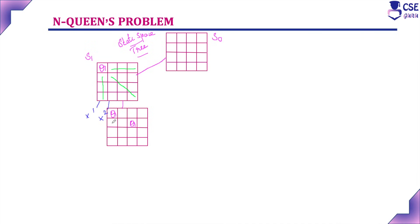With the first queen at (1,1) and the second queen at (2,3), we check for the third queen. The first queen's row, column, and diagonal are blocked, and the second queen's row, column, and diagonal are also blocked. There is no possibility for the third queen in any position in the third row — all four positions are not possible. This is a dead end, and this node is non-promising.